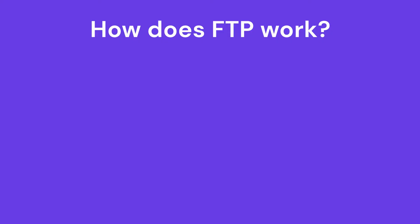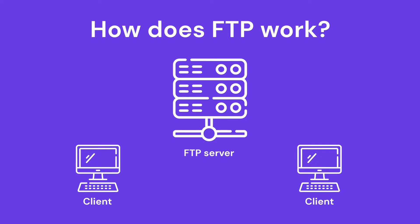How does FTP work? An FTP connection needs two parties to establish and communicate on the network. To do that, users need to have permission by providing credentials to the FTP server. To get or transfer a file, an authorized user will use the protocol to request or create changes in the server, and in return, the server will grant that access.